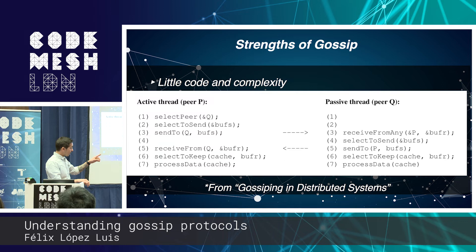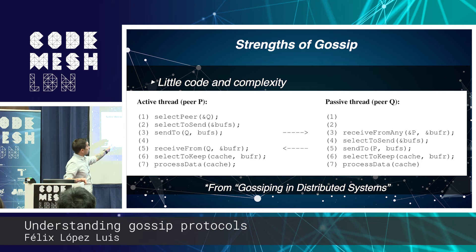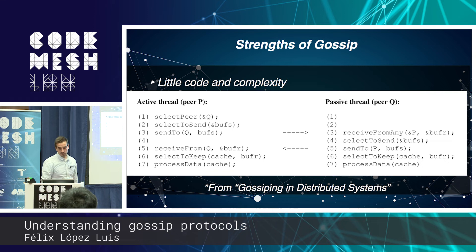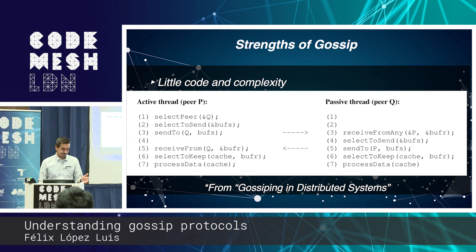For information dissemination using push-and-pull, the protocol is essentially: node P selects a peer Q randomly, selects what information to send, sends it, Q processes the information and sends some information back, and P selects what information to keep and processes the data. That's the protocol. I actually implemented it to verify how easy it was — and it is easy. I don't know if it'll be production-ready, but for open-source exploration, SERF is really good and HyParView is also production-ready, used for example in Riak.